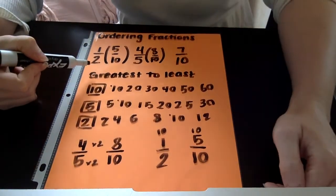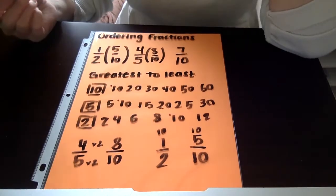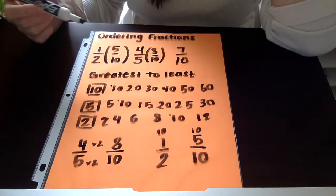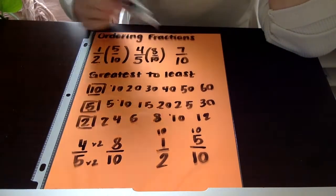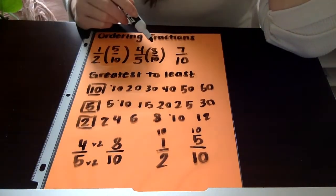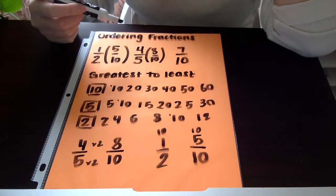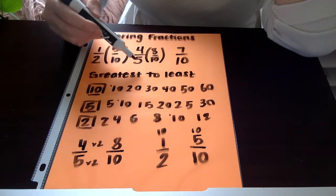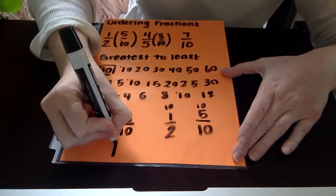Now I've been asked to order these from greatest to least, and I'm going to look strictly at my numerators. So I have 5 tenths, I have 8 tenths, and I have 7 tenths. 8 is the largest of the three numerators, so 8 tenths is going to be my largest fraction. But I've been asked to order my original fractions. So when I start to order them, I'm going to put 4 fifths down here first.